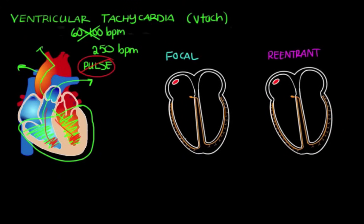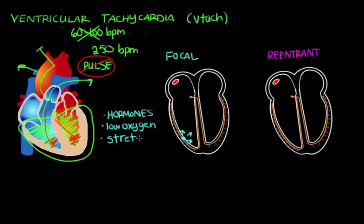In focal VTAC, cells in the ventricles become irritated. These cells might be irritated because of hormones such as stress hormones or thyroid hormone, low levels of oxygen, or stretch in the heart tissue from years of heart disease or old age. For whatever reason, the cells are irritated and they overfire, sending extra stimuli to the ventricular conduction system, which causes the ventricles to beat rapidly, causing VTAC.